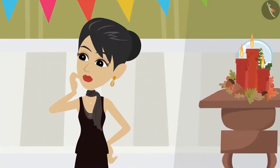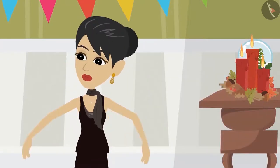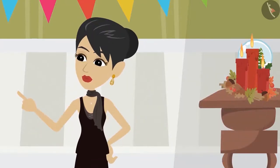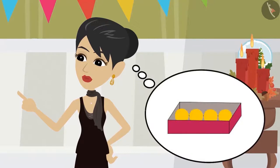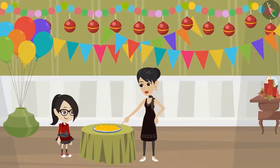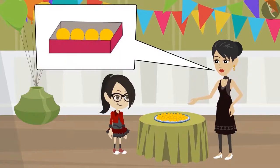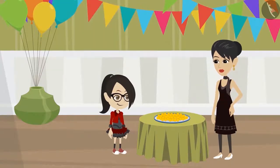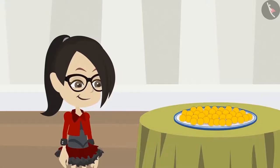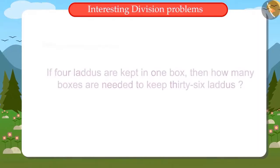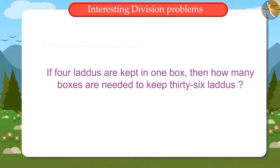Mammi does not know how many boxes are needed. She only knows that four ladoos are to be kept in one box. She asks Vandana to count the ladoos and bring that many boxes. Now Vandana has to find out that if four ladoos are kept in one box, then how many boxes are needed to keep thirty-six ladoos.